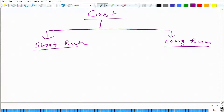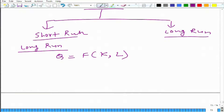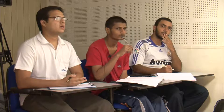Let us talk about long run first, and we take the same production function — that Q can be produced using capital and labor. We are talking about cost. Why are we talking about cost? What is the aim? That would determine on which cost we could supply.